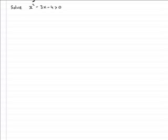Welcome to this tutorial on how to solve a quadratic inequality. What I've done is write down a typical quadratic inequality that you can expect to solve. In this case it's x squared minus 3x minus 4 is greater than zero.